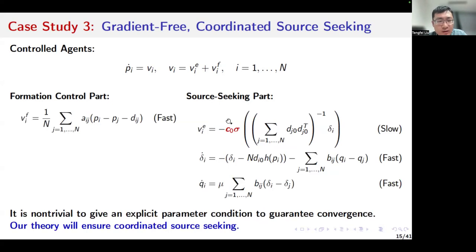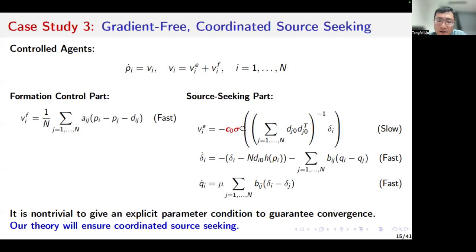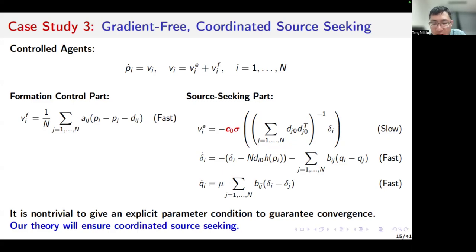Intuitively, the formation control part should be fast enough, because without good formation control it is not easy to do source seeking. Intuitively, the constant c0 and non-linear function sigma should be slow enough. This closed-loop multi-agent system basically involves multiple time scales, and the constant c0 and non-linear function sigma should be fine-tuned to make the source seeking part slow enough to guarantee stability. It is indeed non-trivial to give an explicit parameter condition to guarantee convergence. Our theory will ensure coordinated source seeking.